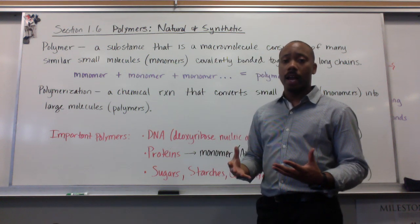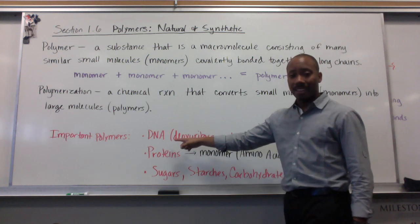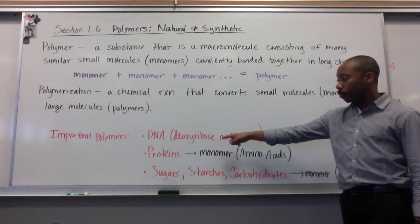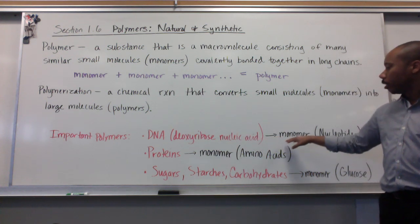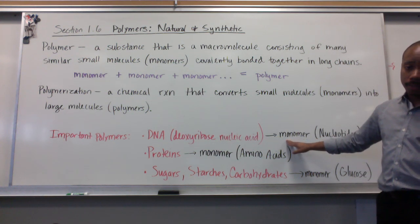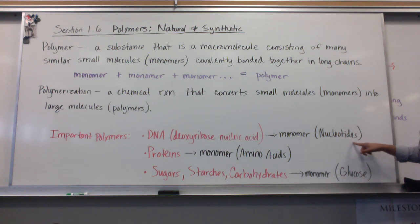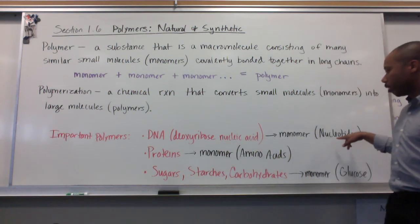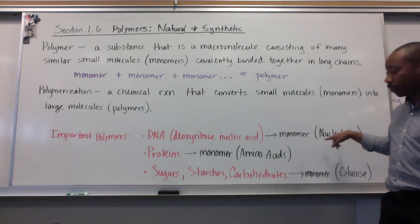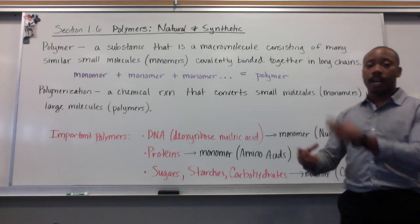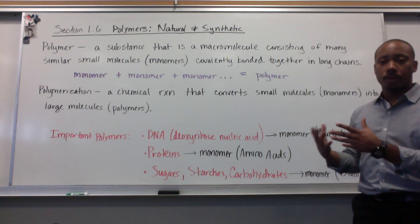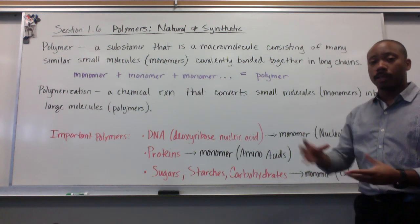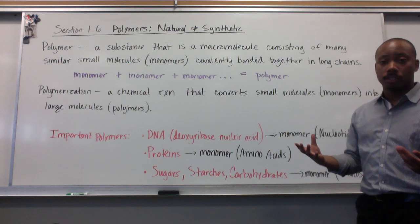There are a few important polymers that are essential for life. One is DNA — deoxyribonucleic acid. The monomer for DNA is nucleotides. That's the nucleic part in DNA — the N stands for the nucleotide. So a bunch of nucleotides stacked together with a few other things create DNA, a long double helix chain.